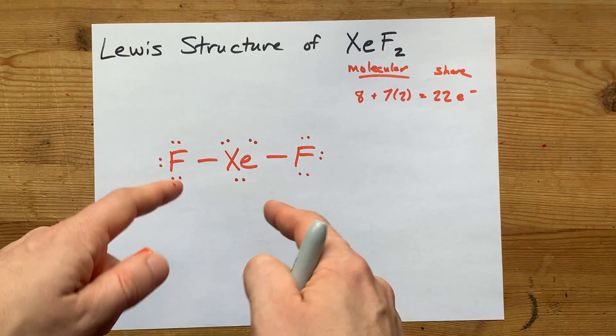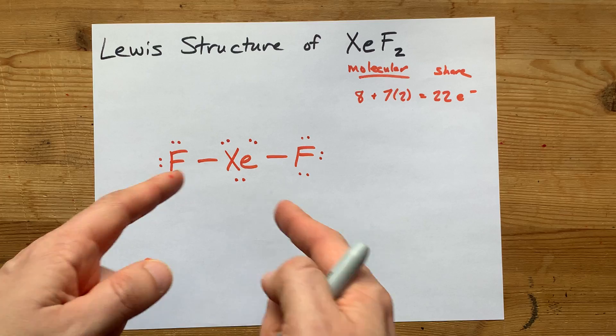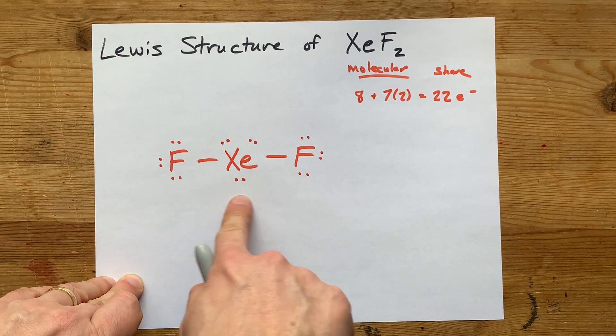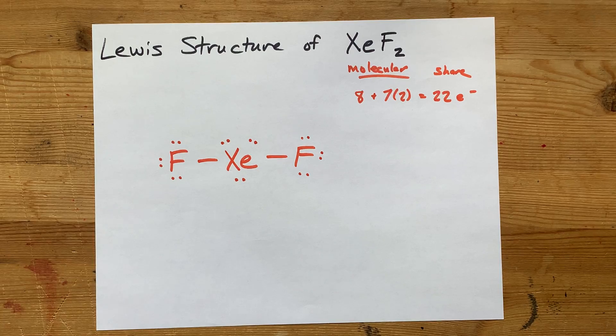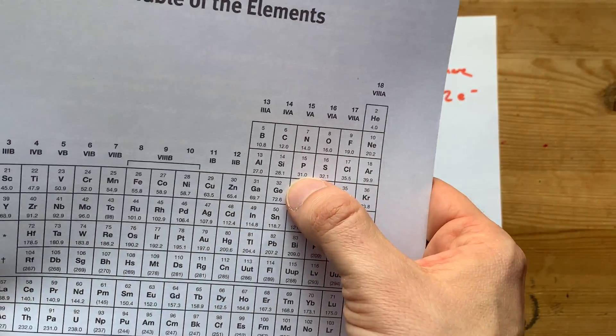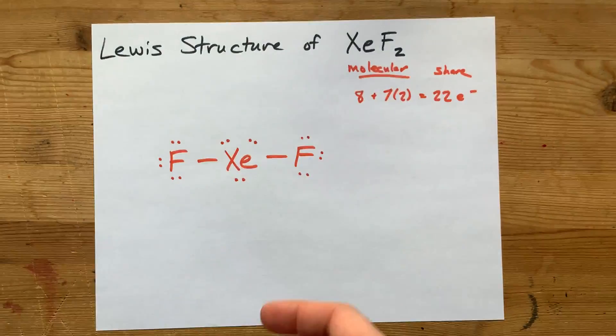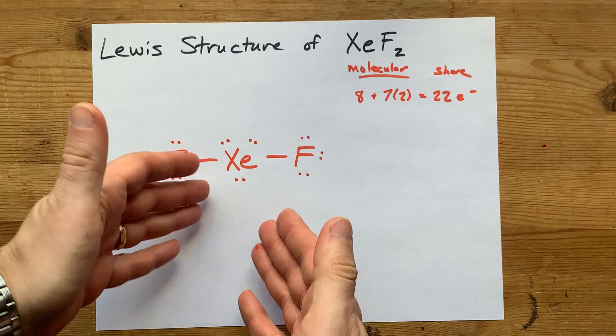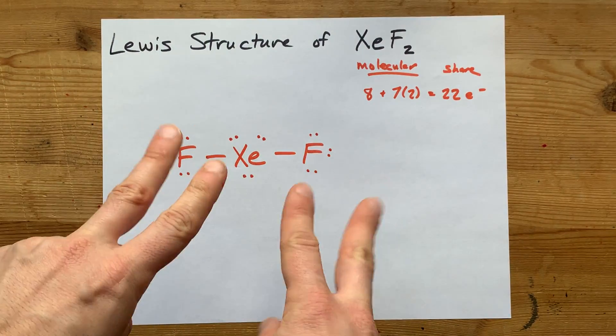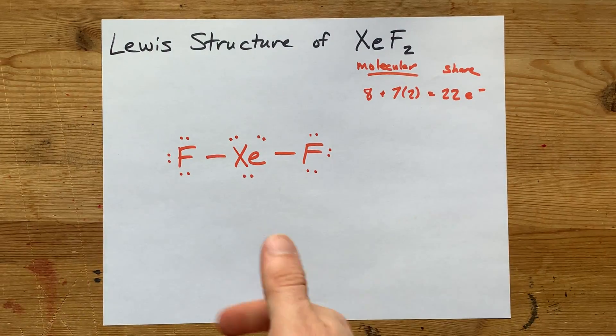But actually, this xenon has an expanded octet already. It already has two, four, six, eight, ten electrons around it. Xenon, as well as basically any of the nonmetals starting with phosphorus and onward, can have an expanded octet where it has more than eight electrons around it. It's called an expanded octet, and it's a violation of the octet rule.